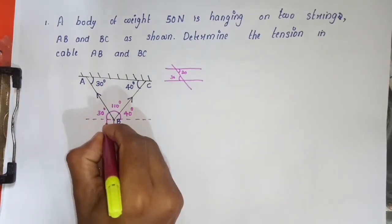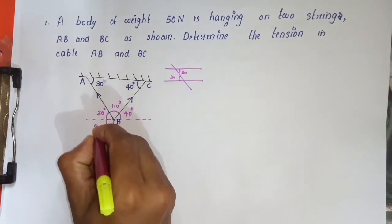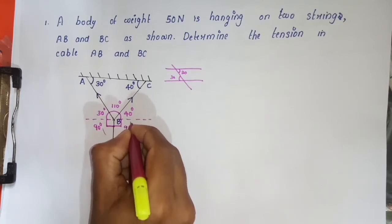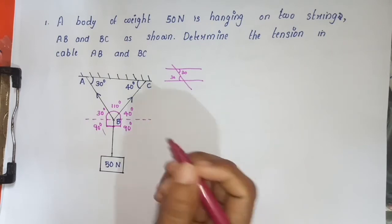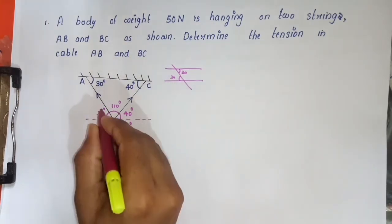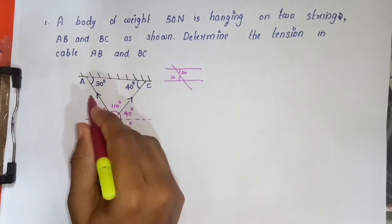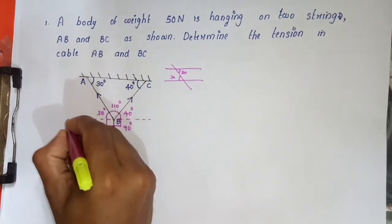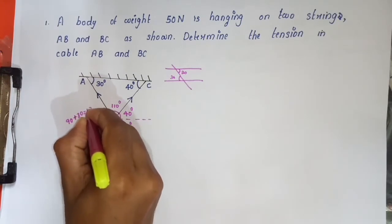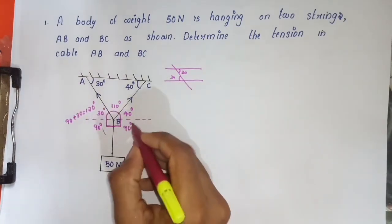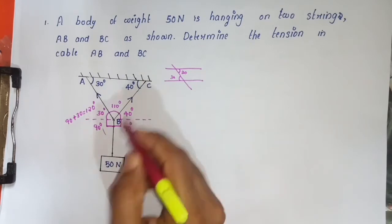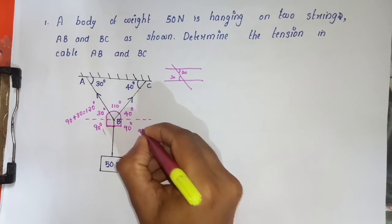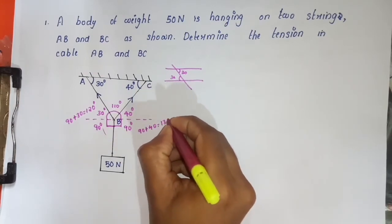This is 90 degrees on the horizontal. So the angle opposite to TAB is 90 plus 30, which gives 120 degrees. The angle opposite to TBC is 90 plus 40, which gives 130 degrees.